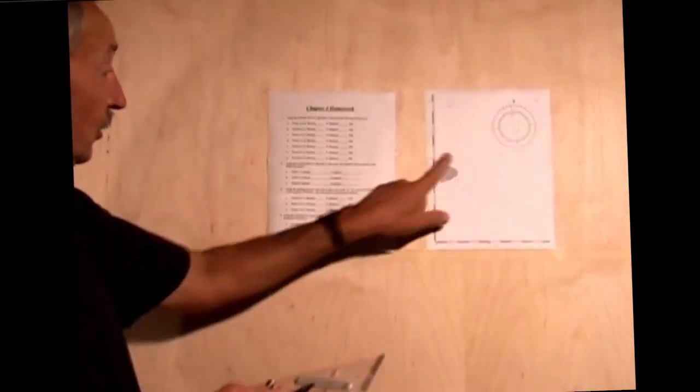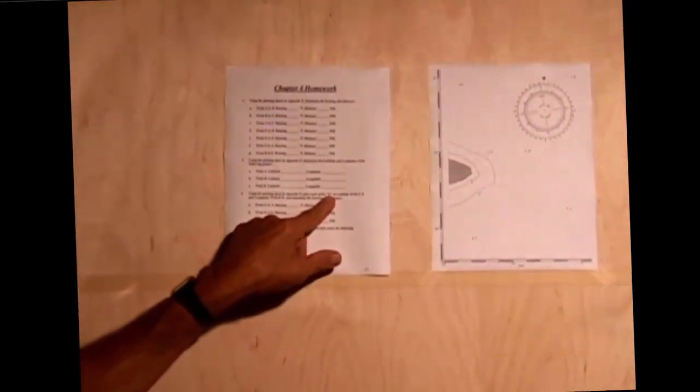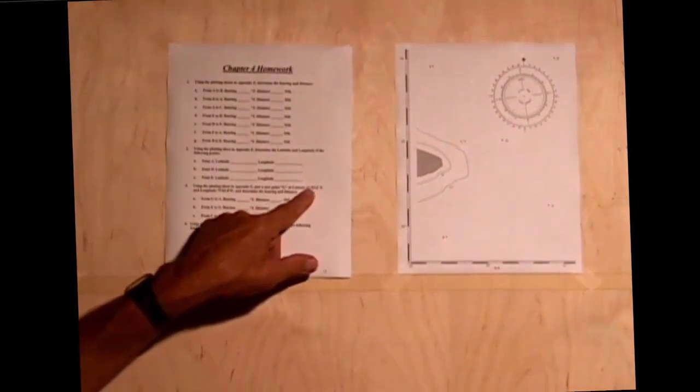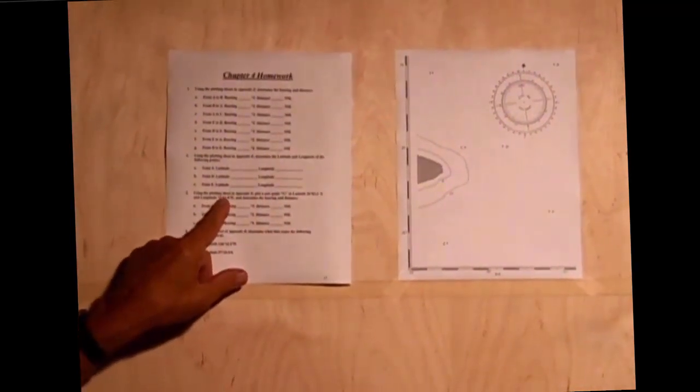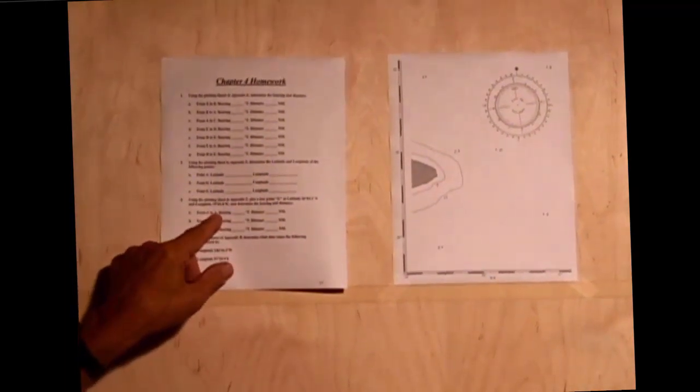using the plotting sheet of Appendix Z, which is this, plot a new point G, which is not printed on the chart, at latitude 26°03.2' and longitude 75°02.8', and determine the bearing and distance from that new point G to A.